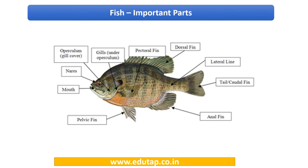This is a very basic video where we shall see some very important points and it will help you build your fundamentals. Let us start with this picture which you can see on your screen. Let us quickly go through the parts of a fish. The mouth is given, then we have nares — nares are actually the paired nostrils, and they help to detect odor.